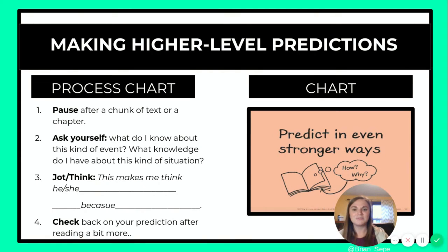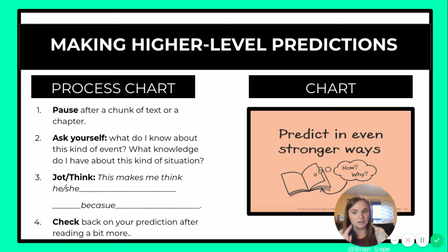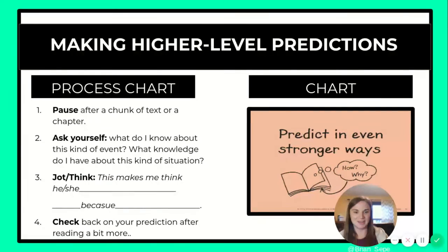So making those higher level predictions: step one, pause after a chunk of text or a chapter. Step two, ask yourself what do I know about this kind of event? What knowledge do I have about this kind of situation? What just happened, and what do I already know about it? And then stop and jot: this makes me think blank because blank. And then don't forget to check back.